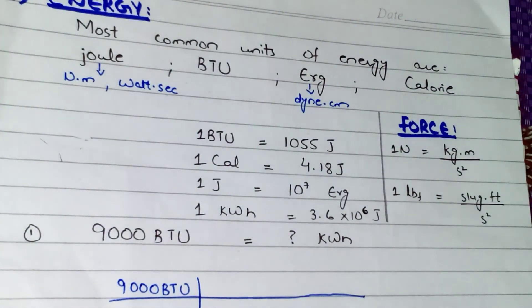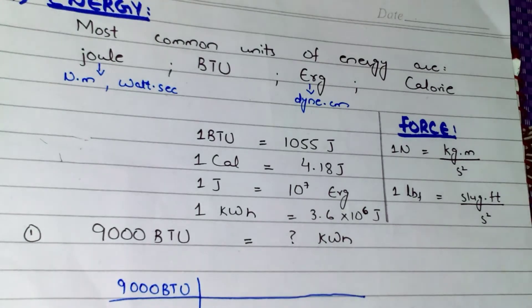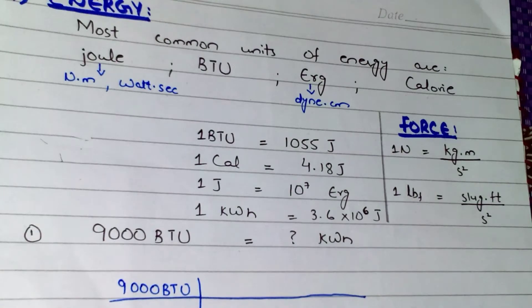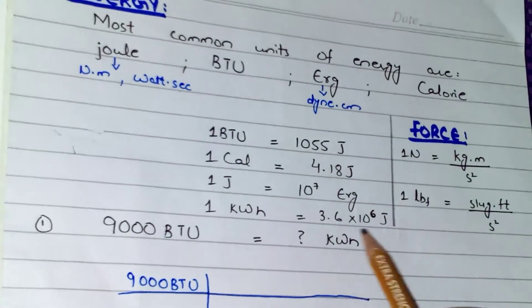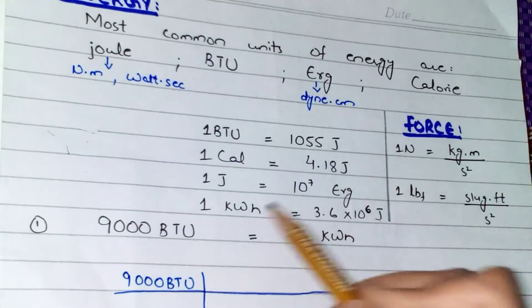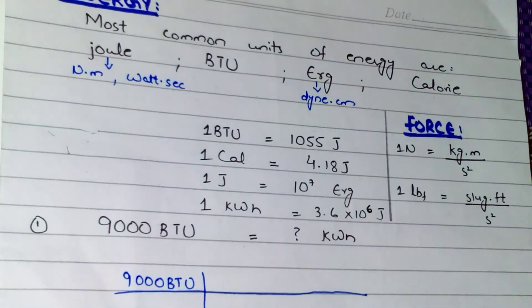I don't know the direct conversion of BTU to kilowatt-hours, but there is an alternate way. I know the conversion of BTU to joules, and I know the conversion of joules to kilowatt-hours. You will only become skilled at finding alternate paths by doing more and more practice of these conversions. So by these two steps we can find out how many kWh are in 9000 BTU.